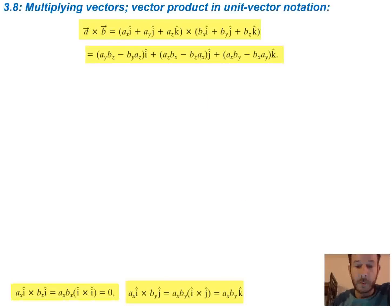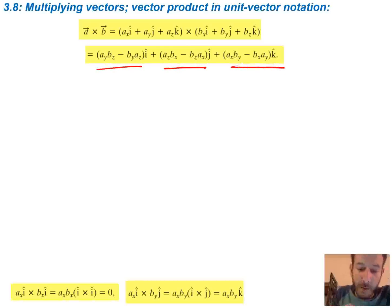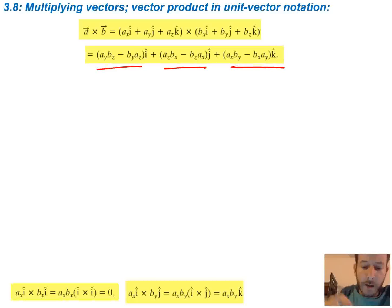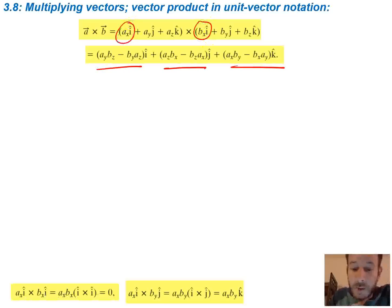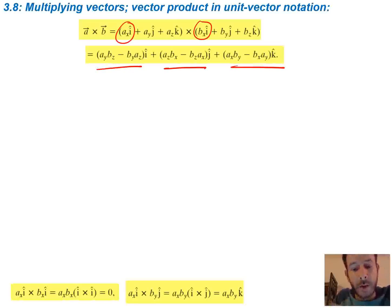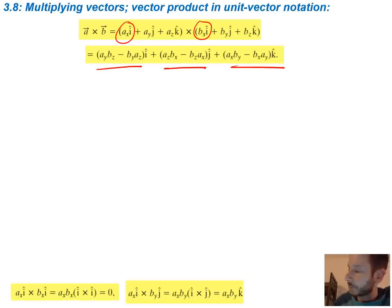Similarly to the dot product, you can multiply all the terms out for the cross product. Since it's a vector, you get components in the i, j, and k directions. The same-direction terms like X·X go away because the sine of 0 is 0 — so Ay·By and Az·Bz also go away. But all cross-direction terms survive because the angle between them is 90 degrees and sine of 90 is 1. So we keep all the mixed terms.